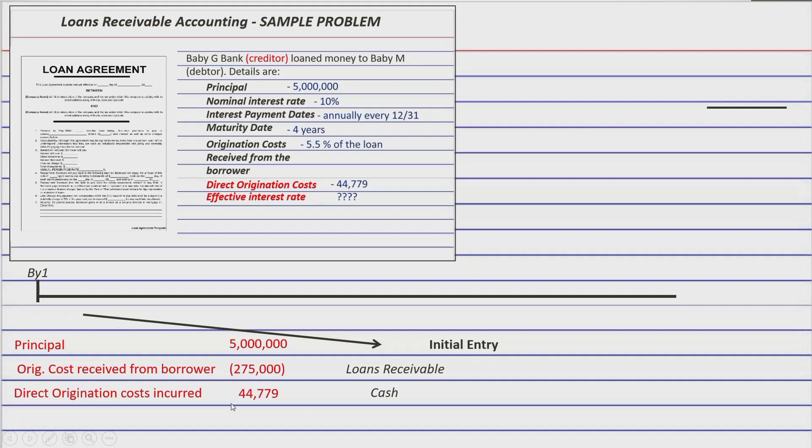So now, 5,000,000 minus 275,000, again that is 5.5% of this 5,000,000 plus 44,779 equals 4,769,774. So that's the amount that you're going to use in this journal entry and that's the beginning amount of the timeline. Now the problem is that you cannot proceed with the timeline because of the lack of effective rate.